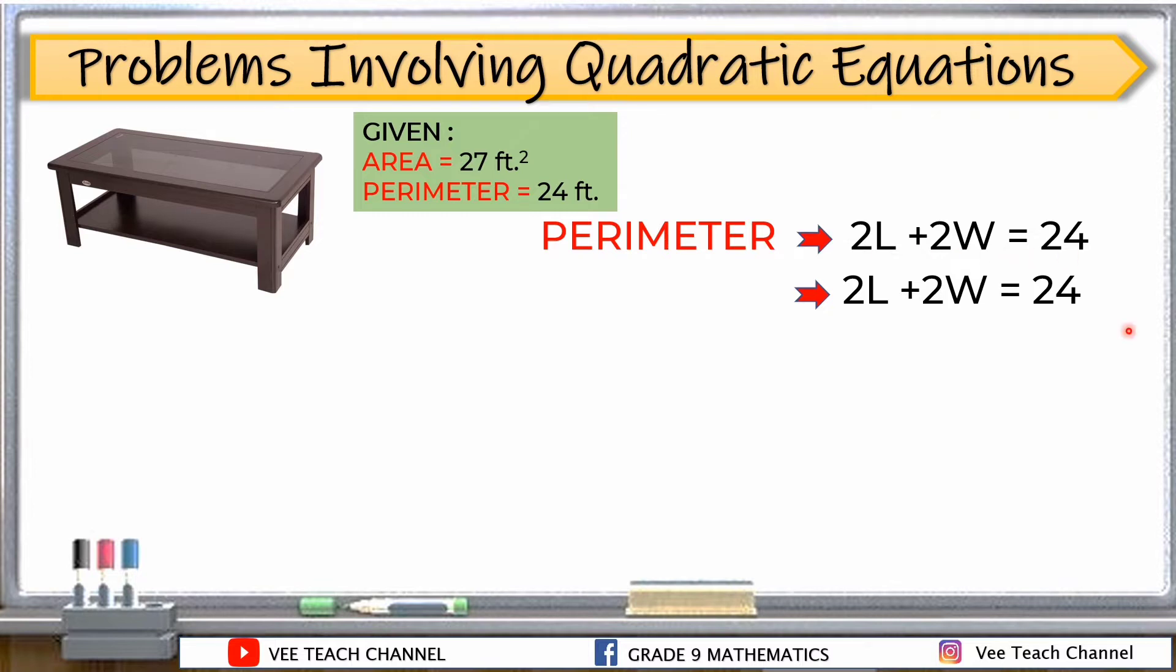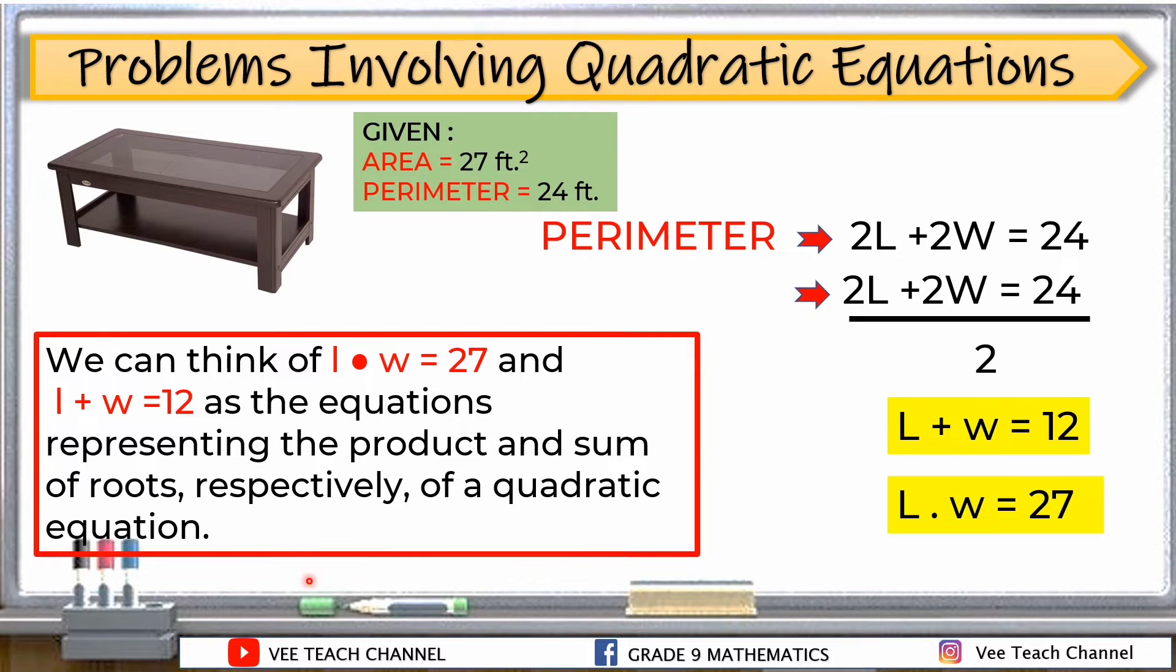Then, yung perimeter natin is 2 length plus 2 W is equal to 24. Saan galing ang 24? Ang 24 ay makikita natin dun sa given ulit ng ating problem. The perimeter is 2 length plus 2 width is equal to 24. And this perimeter can be simplified. We can divide all the terms to 2. So, 2 length divided by 2 is equal to L na lang. And then, 2 width divided by 2 is W na lang. And then, 24 divided by 2 is 12.